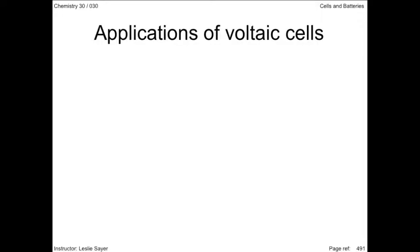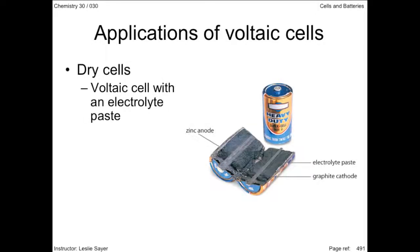The voltaic cells discussed so far don't look much like the cells we put in our watches, cell phones, or MP3 players. That's because we actually use dry cells—smaller cells based on the same chemistry but using an electrolyte that is a paste instead of a liquid. Shown in this picture from your text is a D cell.